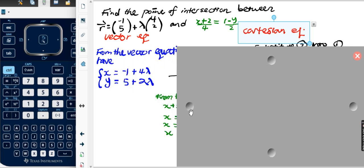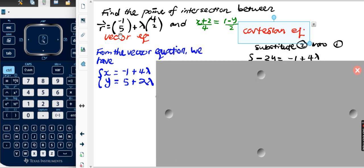So the first thing to do is from the vector equation, I'm rewriting this using the parametric way into parametric equation. So x equals negative one plus four lambda, y equals five plus two lambda. And I'm going to do the same thing with the Cartesian equation.